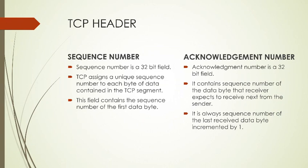Sequence number and acknowledgement number are both 32-bit fields. TCP assigns a unique sequence number to each byte of data in the TCP segment; the sequence number field contains the sequence number of the first data byte. The acknowledgement number contains the sequence number of the data that the receiver is expecting to receive from the sender — it is always the last received sequence number incremented by one, so the receiver receives packets in the correct order.